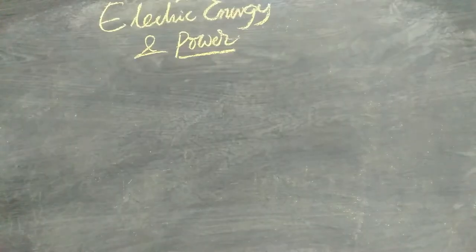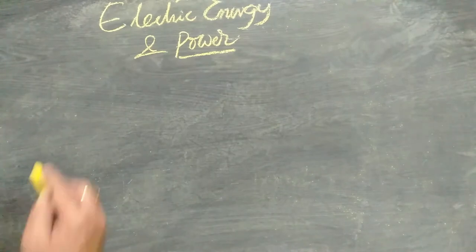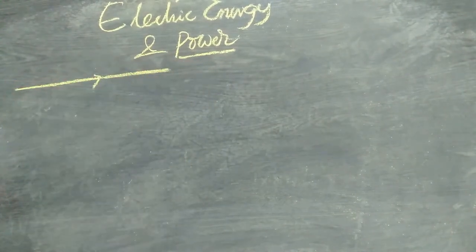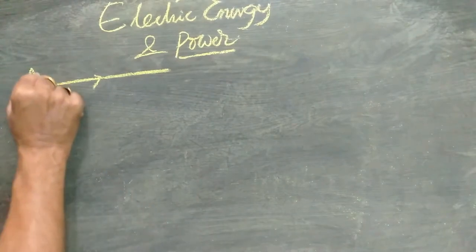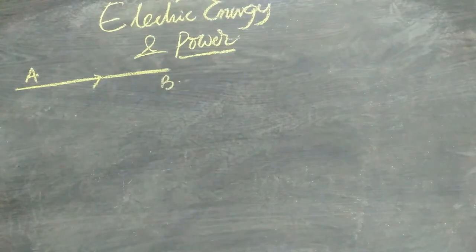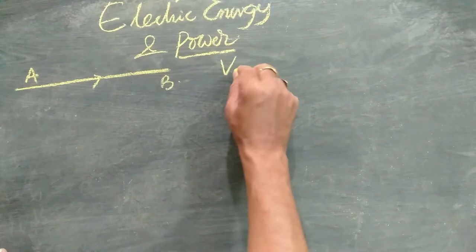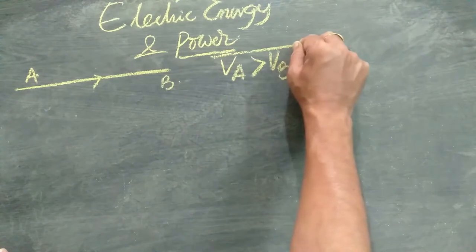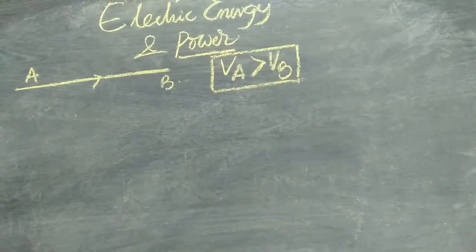Let's talk about electric energy and power. Suppose if a wire is there, a conductor is there, the current is passing from A to B. We know that the direction of the current is always from higher potential to lower potential. So immediately one can write Va is greater than Vb. This is the first, at first instance, you must observe this fact.